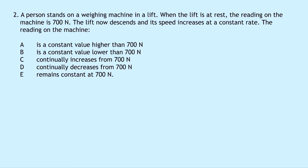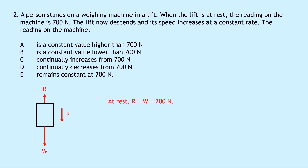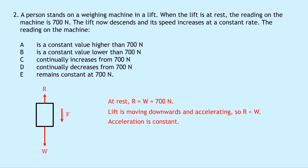If the lift moves downwards and accelerates, the weight downwards must be bigger than the reaction force upwards, so the unbalanced force is downward. At rest, the reaction force equals the weight, which is 700 newtons. But with the lift moving downwards and accelerating, the reaction force is less than the weight. Since the acceleration is constant, the reading on the machine will be a constant value lower than 700 newtons — so you won't see a continually changing value. The answer is B.